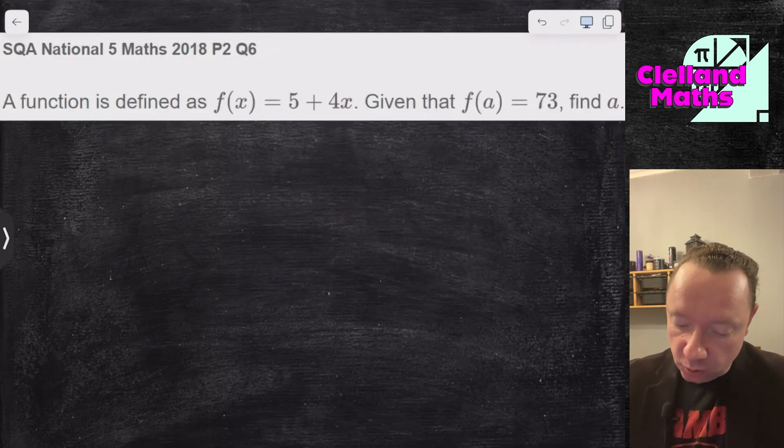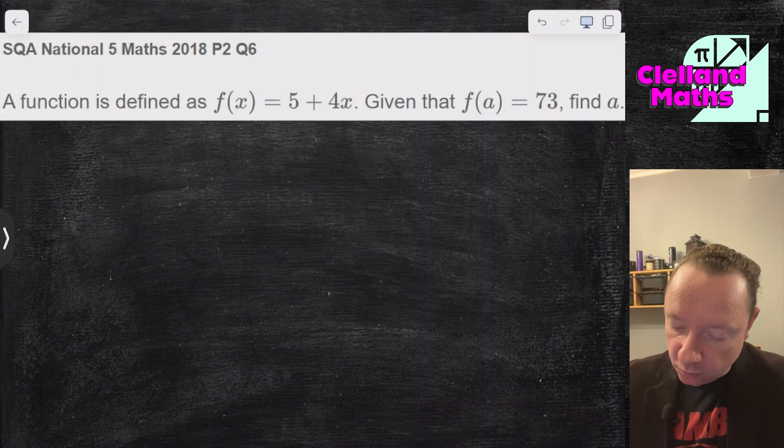SQA National 5 Maths 2018 Paper 2 Question 6. f of x equals 5 plus 4x. f of a equals 73. Find a. So x becomes a to start with.